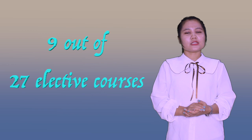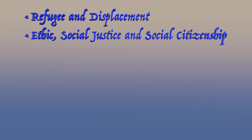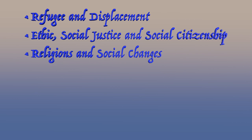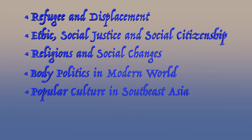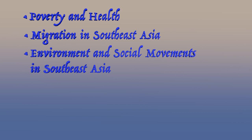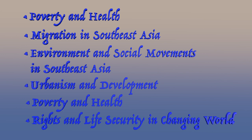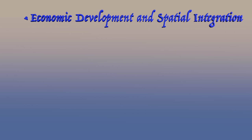In order to take these courses, we must pass the courses from the core course. There are 27 elective courses, but you will only have to take 9 out of 27. The elective courses include: Refugee and Displacement, Ethnic Social Justice and Social Citizenship, Religion and Social Change, Body Politics in Modern World, Popular Culture in Southeast Asia, Civil Society, Non-Governmental Organization and Social Movement, Poverty and Health, Migration in Southeast Asia, Environment and Social Movement in Southeast Asia, Urbanism and Development, Poverty and Health, Rights and Life Security in the Traded World, Economic Development and Spatial Integration, and Social Policy and Social Welfare System.